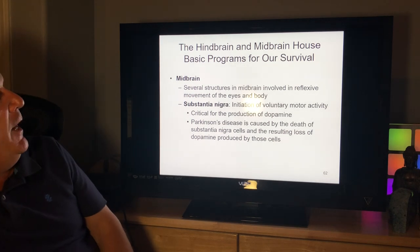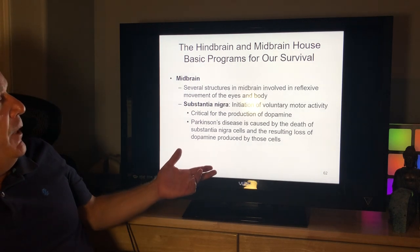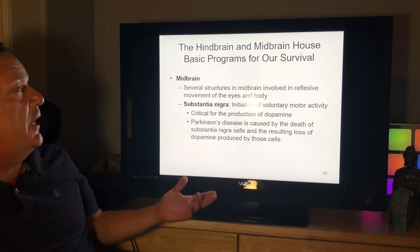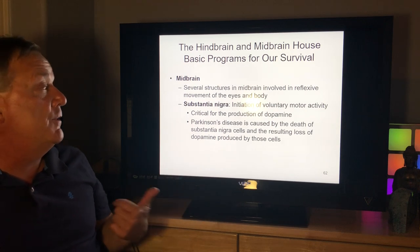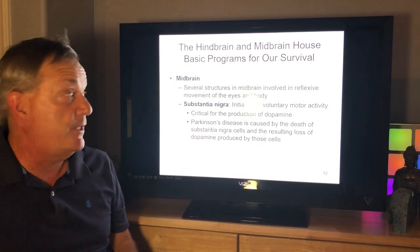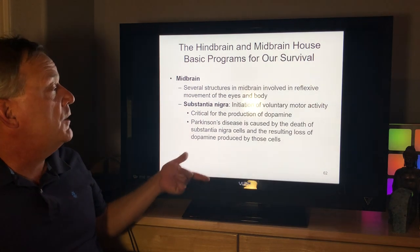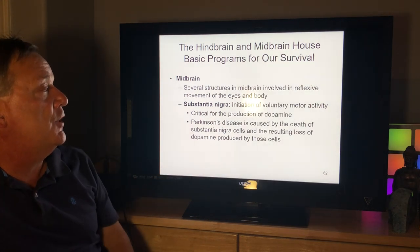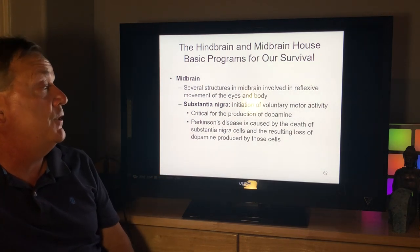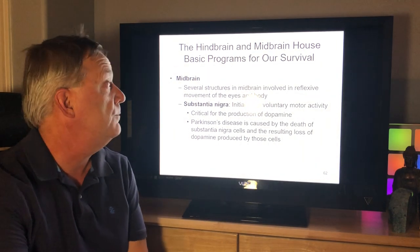Several structures in the midbrain are involved in reflexive movement of the eyes and body. The substantia nigra is involved in initiation of voluntary motor activity and is critical for the production of dopamine. Parkinson's disease is caused by the death of substantia nigra cells and the resulting loss of dopamine produced by those cells.